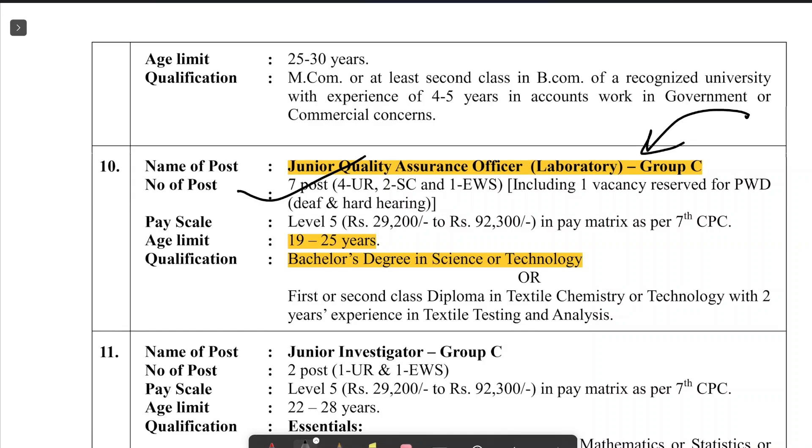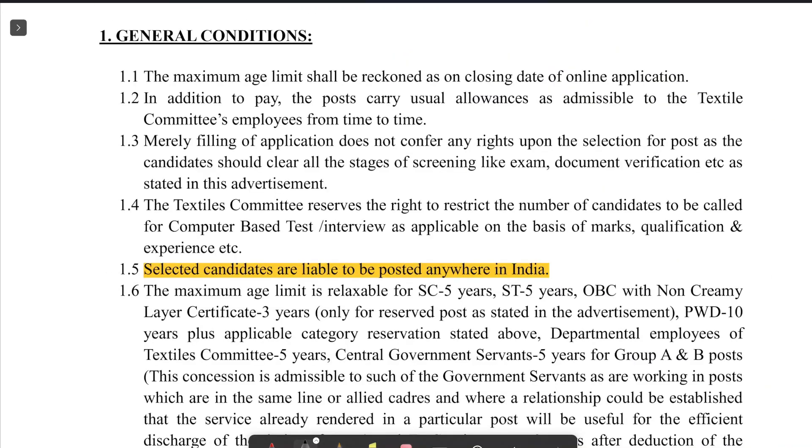The second one is Junior Quality Assurance Officer Laboratory Group C. This requires a Bachelor's degree in science and the age criteria is 19 years to 25 years.